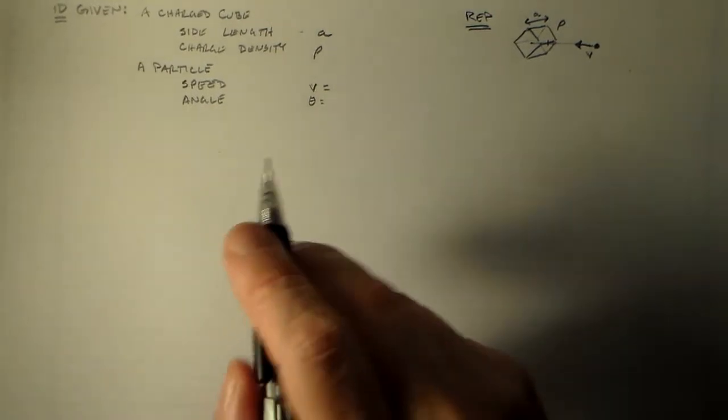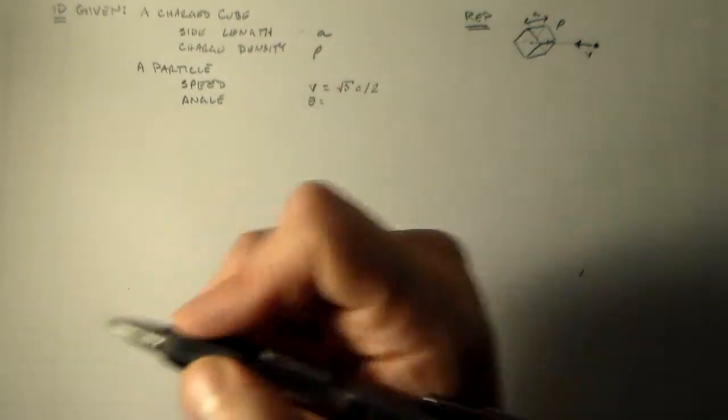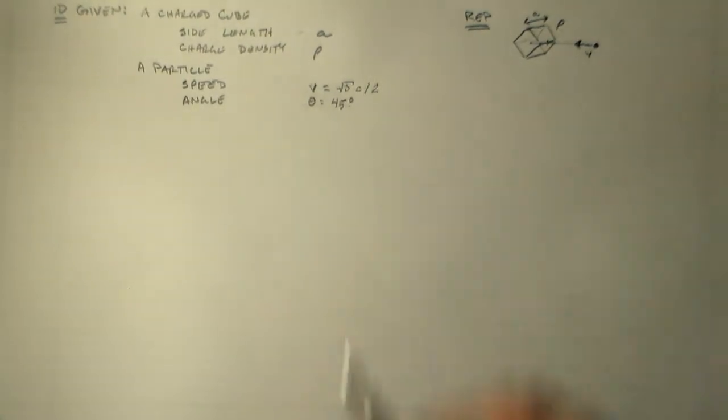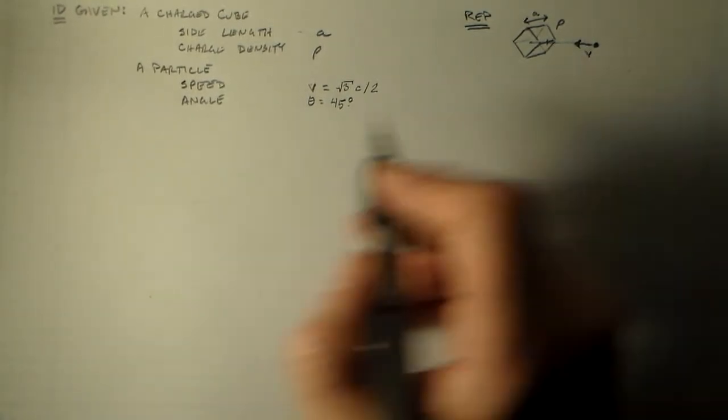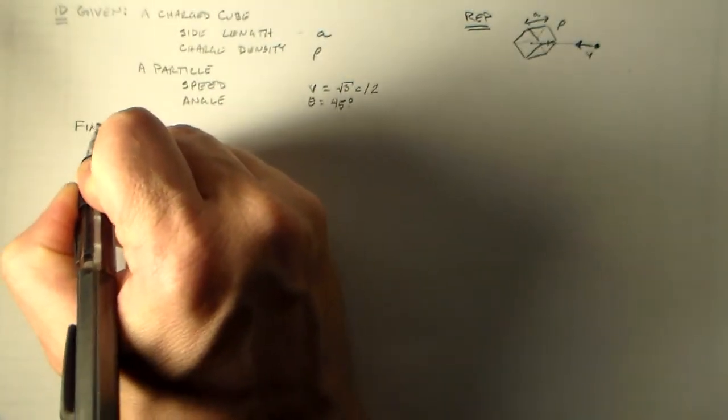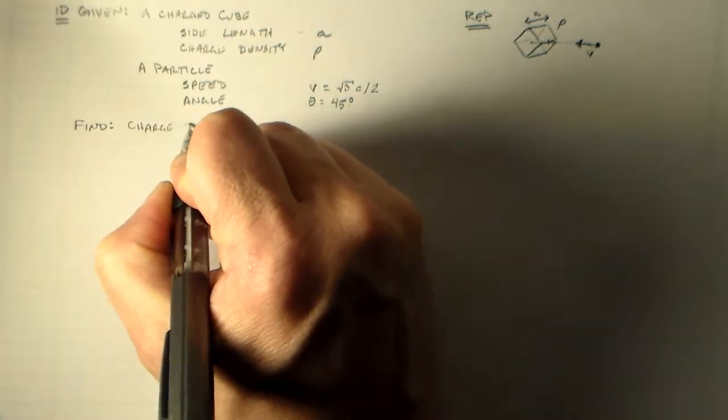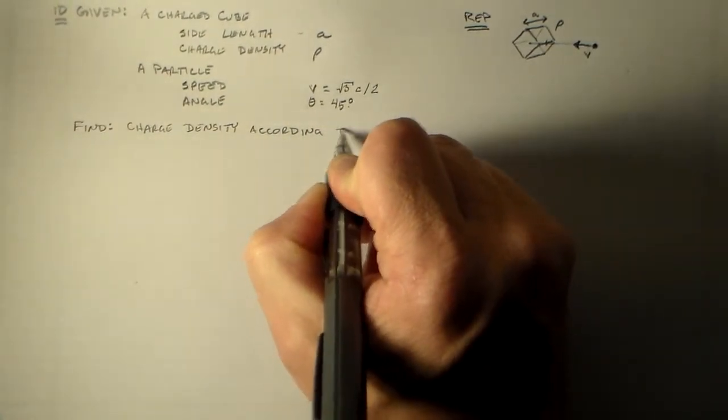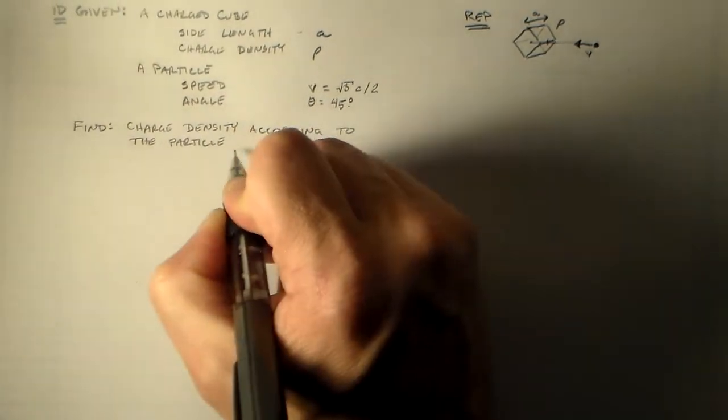I think actually in this case I want to give these some numbers. I don't usually do that in these videos, but I think it'll make things a little clearer and have less nastiness in the end due to the Lorentz contraction. So the speed, I think, should be √3 times C over 2. That's a nice, useful number that you remember from far too much trigonometry. And the angle that it's coming in at would be 45 degrees.